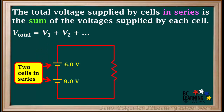Here are two cells in series: a 9-volt cell and a 6-volt cell. Both cells in series are in the same loop or pathway. Each electron has to pass through both cells. As an electron passes through the 6-volt cell, its electrical potential increases by 6 volts.